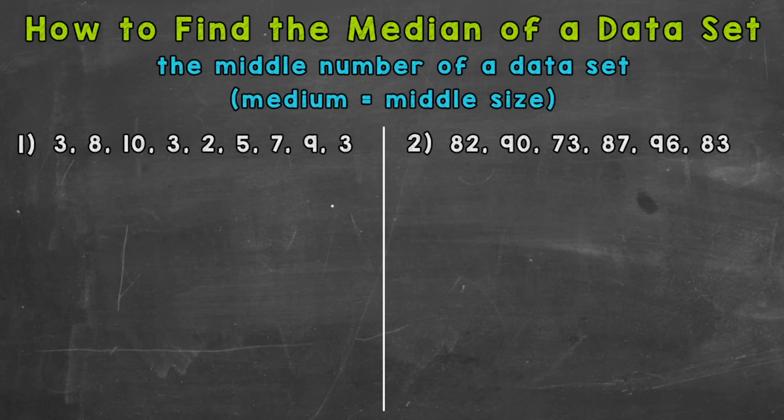So number one here, the first thing we need to do, we need to list those numbers in order from least to greatest. So our first number, our lowest in value, is this two here. And I cross it off, that way I don't count it twice or forget anything.